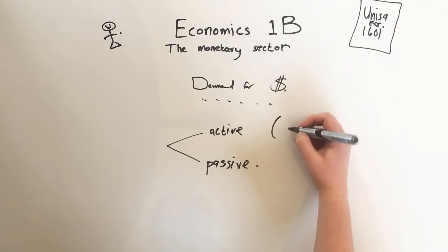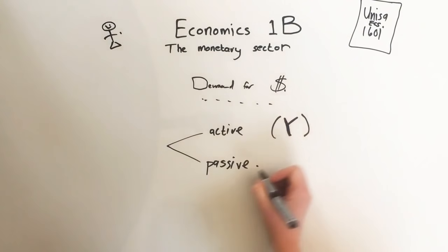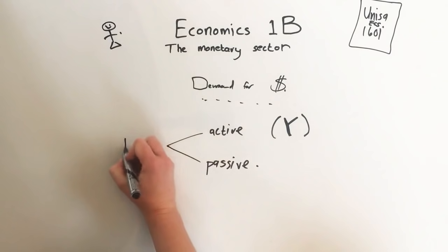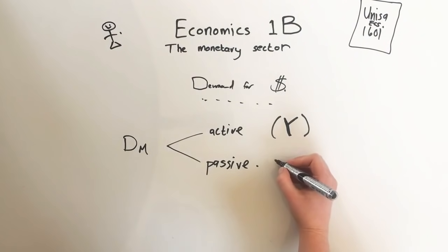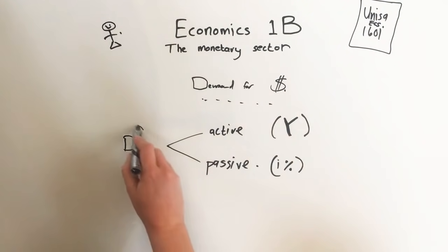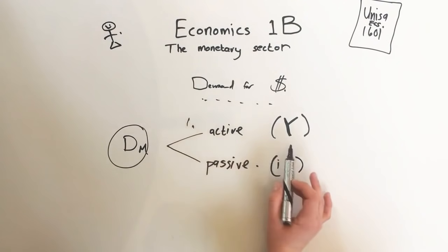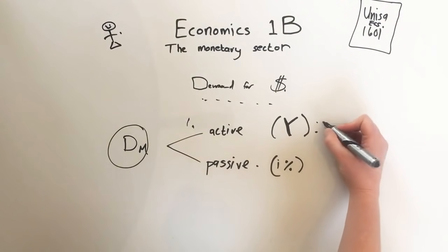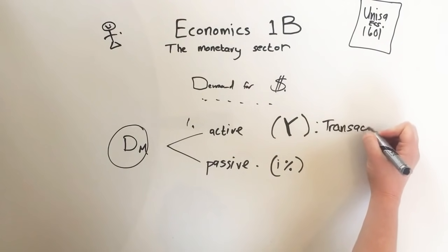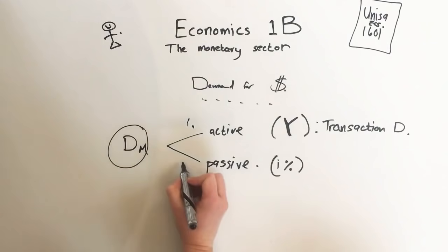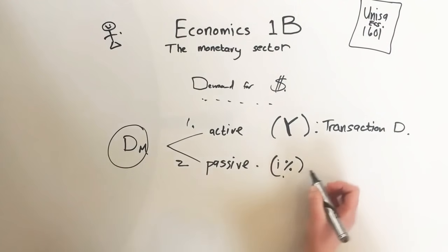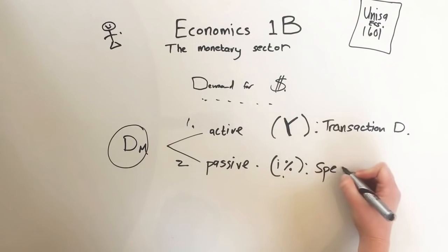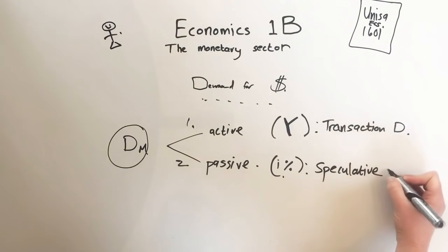The active balance depends on income levels, which we write with a Y. The passive demand for money depends on the interest rate. So demand for money number one is the active balance, also called the transaction demand for money. Number two is the passive demand for money, which depends on the interest rate — also called the speculative demand for money.